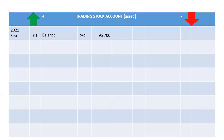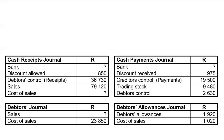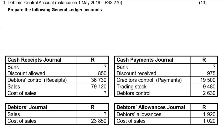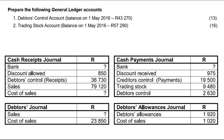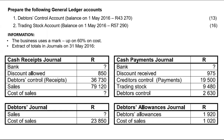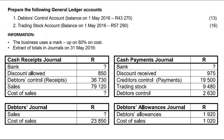We get more trading stock by buying it cash. When we buy it cash, we write 'bank' and that will be in the CPJ. You go to your CPJ and check your trading stock column total — the trading stock column total in the CPJ is 9,480. So I will take that 9,480 and put it on the debit side of my trading stock account.